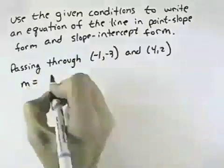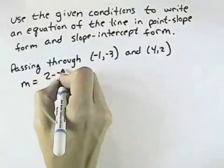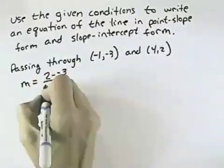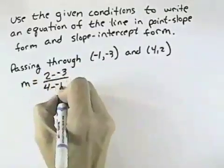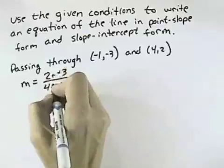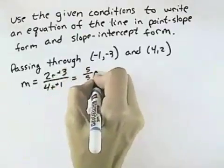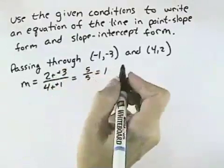So the slope would be the difference between the y values. I could take 2 minus negative 3, in which case the 4 comes first for the difference between the x values. Plus a minus a negative becomes plus a positive to give me 5 over 5, or a slope of 1.